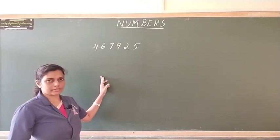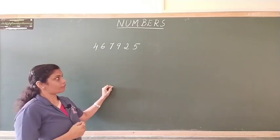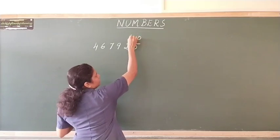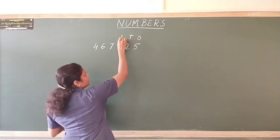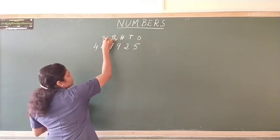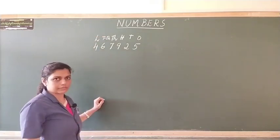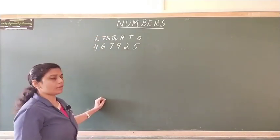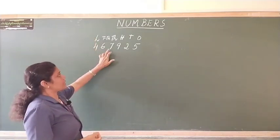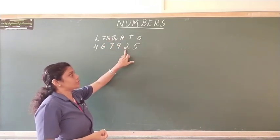So, how do we read this? Before we try to read it, let us write the place values of this number. In the end, we have 1's place, next comes 10's place, 100's place, 1000's place, 10,000's place and finally lakhs place. So, now let us read it. It is 4,67,925.